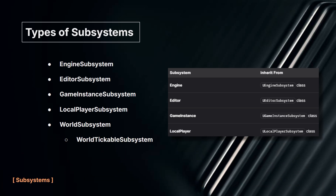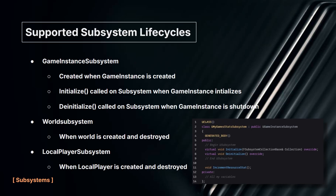Each subsystem has an automated initialize and de-initialize that is connected to the parent system. For example, your Game Instance class will automatically create a Game Instance Subsystem and will execute the initialize function when the game instance initializes, and de-initialize when it's shut down. You can put debug logs in there to see when the game starts and when you end the session in the editor. The same applies to the World Subsystem and the Local Player Subsystem — they'll be created and initialized when the world or local player is created, and de-initialized when they are destroyed.